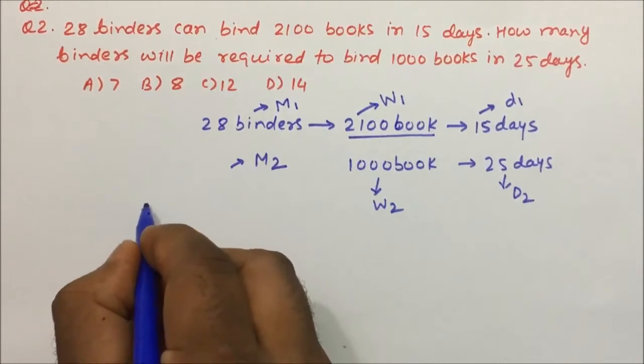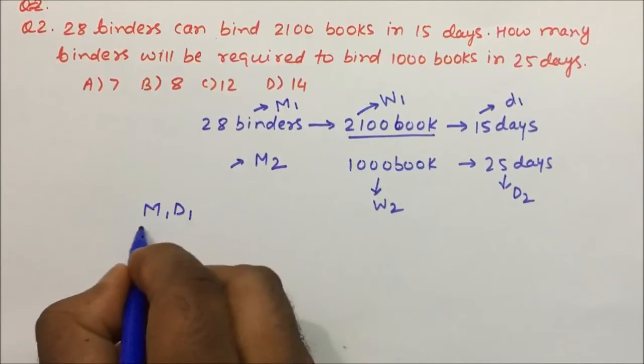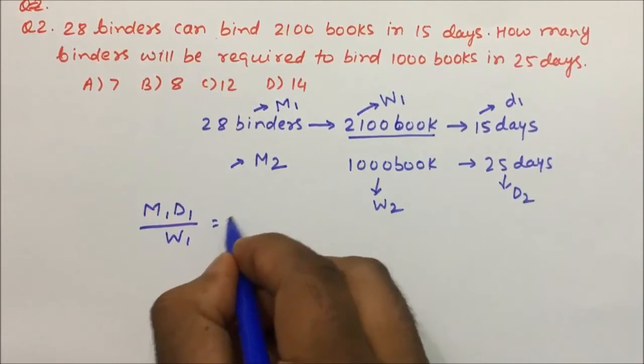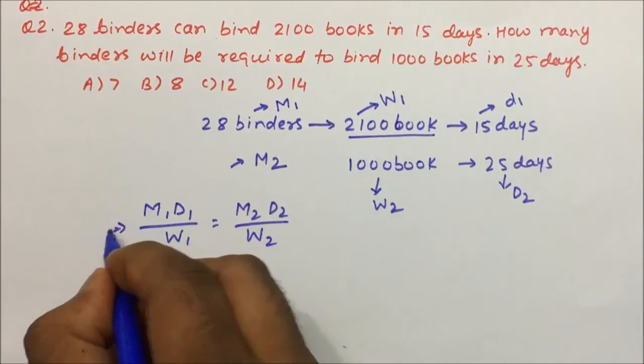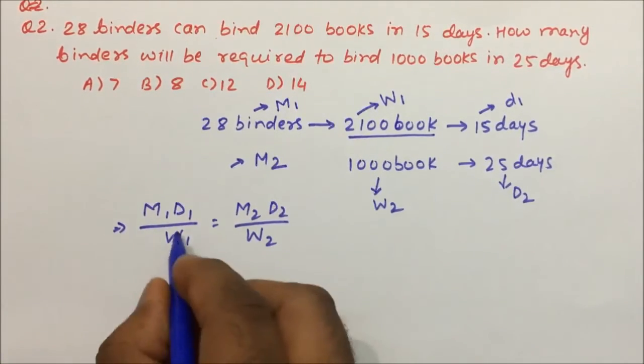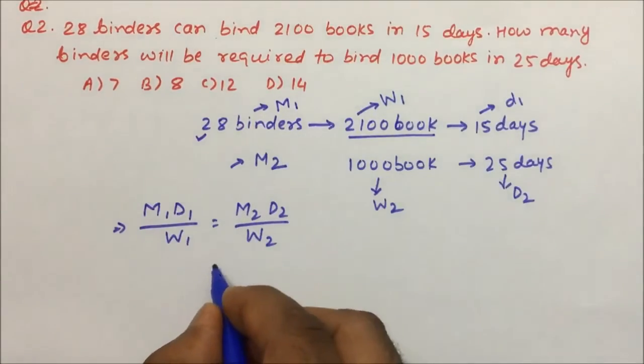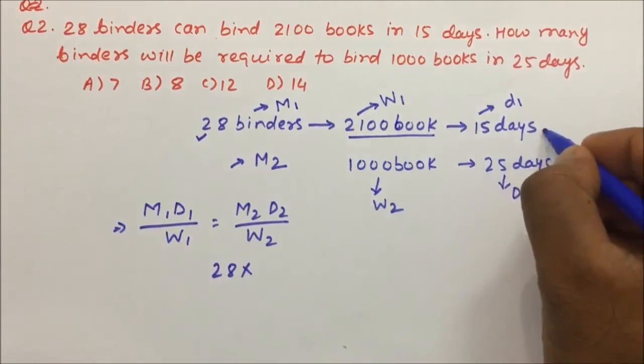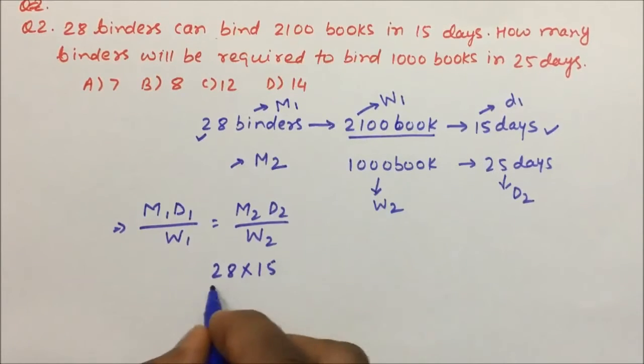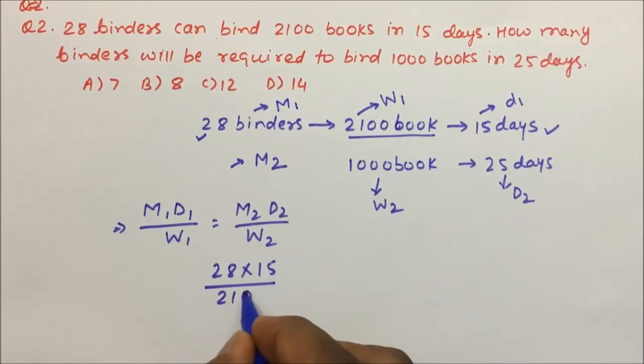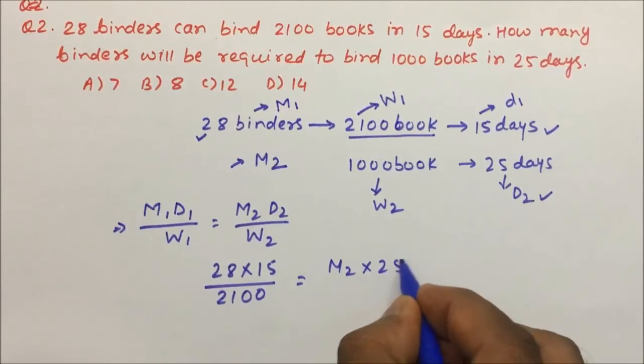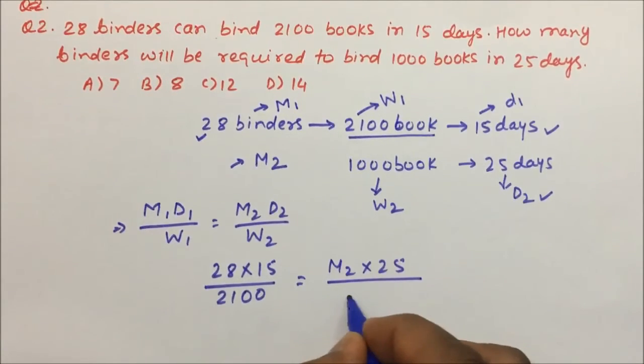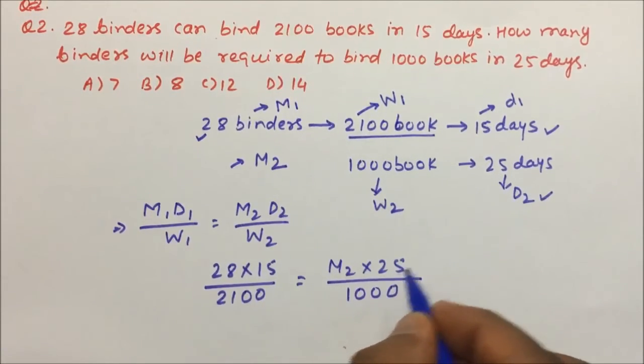What is our formula? The formula is M1*D1/W1 equals M2*D2/W2. M1 is 28, D1 is 15, and W1 is 2100. M2 is what we have to calculate, D2 is 25, and W2 is 1000 books.